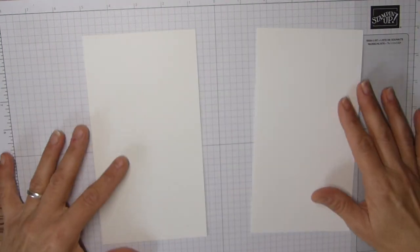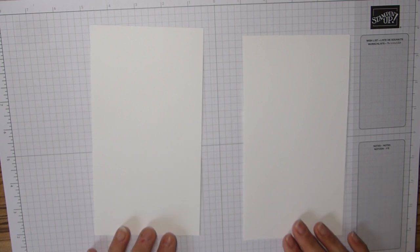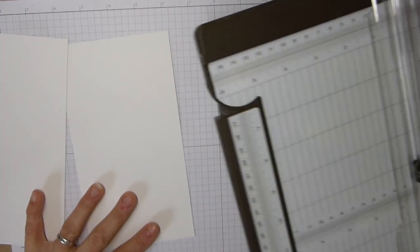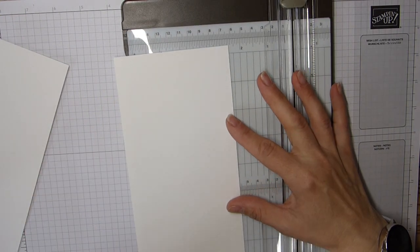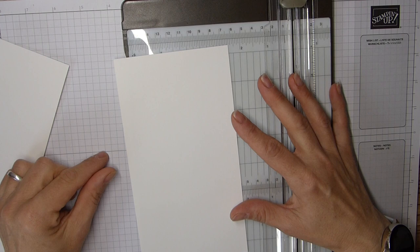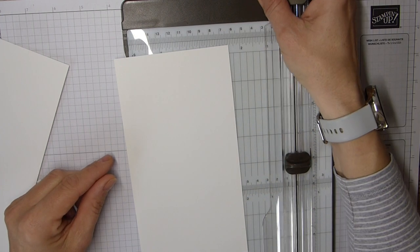To start off with you're going to need two pieces of whisper white cardstock that are seven and three quarters by four and a quarter. I'm going to use my trimmer to measure these because there are some odd measurements. Two whisper white seven and three quarters by four and a quarter, 19.7 by 11 centimeters.